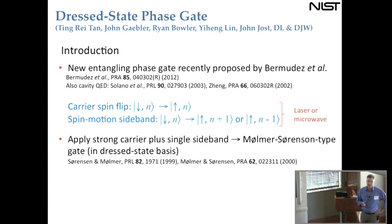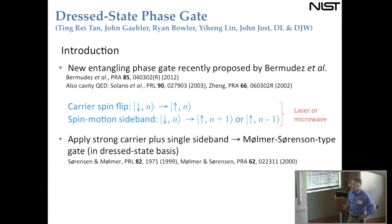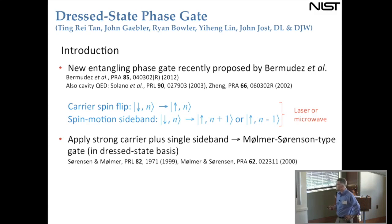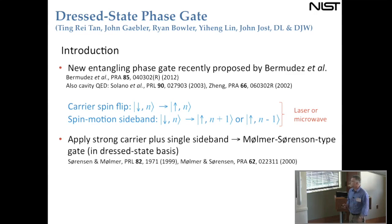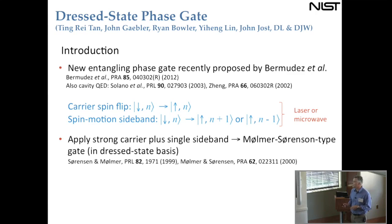In our implementation of this gate, we can choose to use either lasers or microwaves to implement the carrier spin flip, and in principle one could use both for the sideband as well. The idea is to apply a very strong carrier pulse simultaneously with a single sideband, giving a Mølmer-Sørensen type gate where the strong carrier effectively flips between motion-adding and motion-subtracting in time.